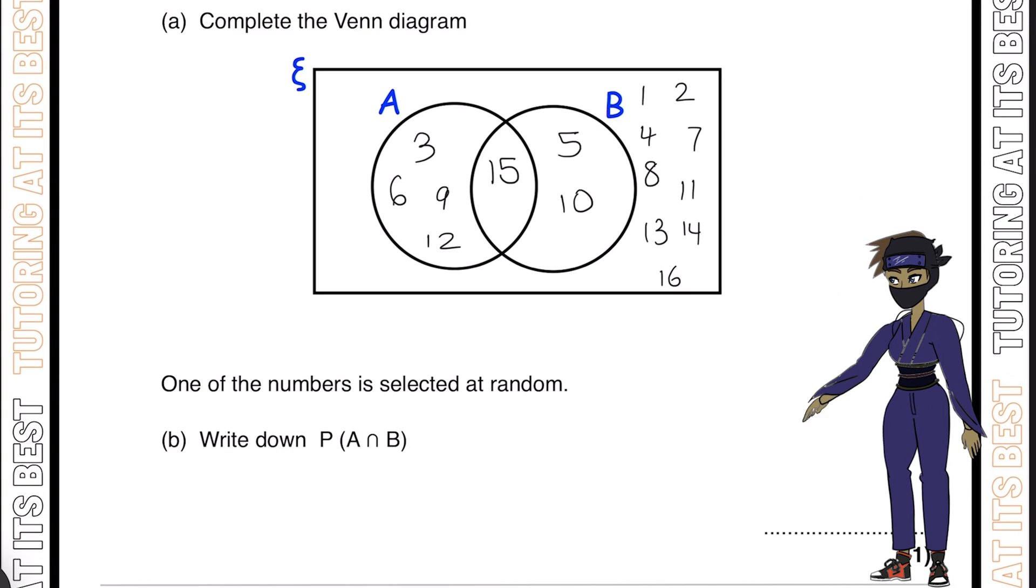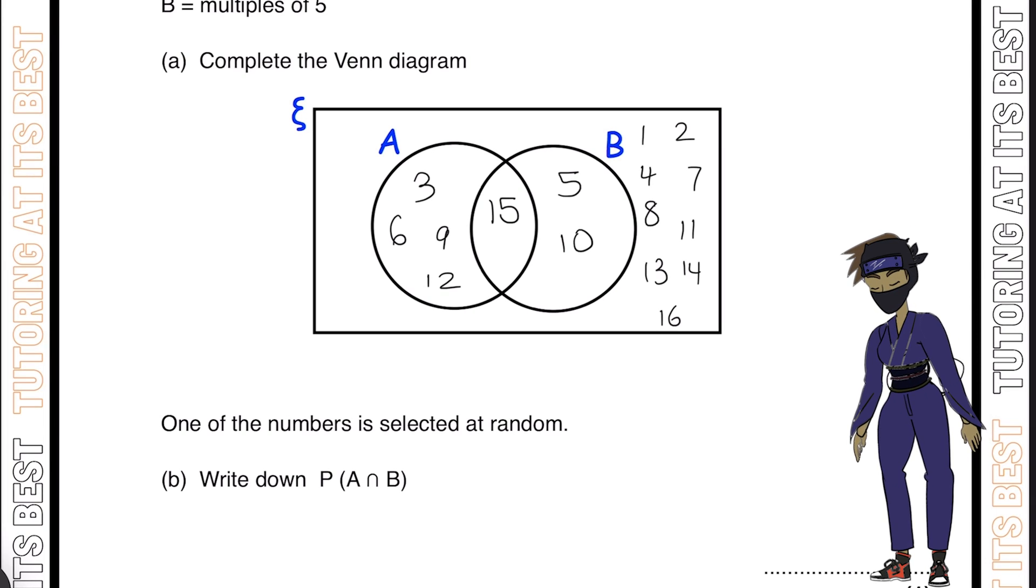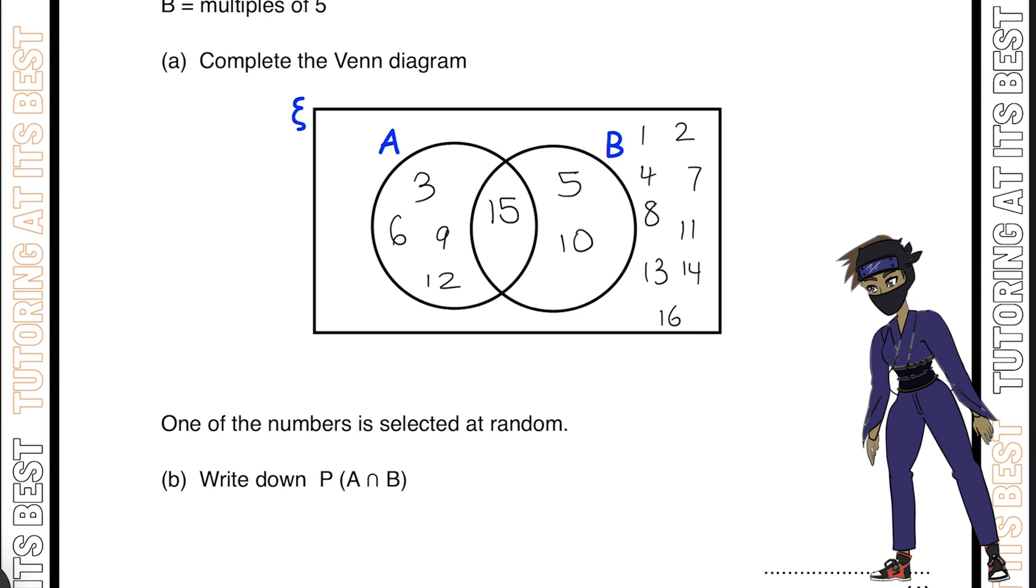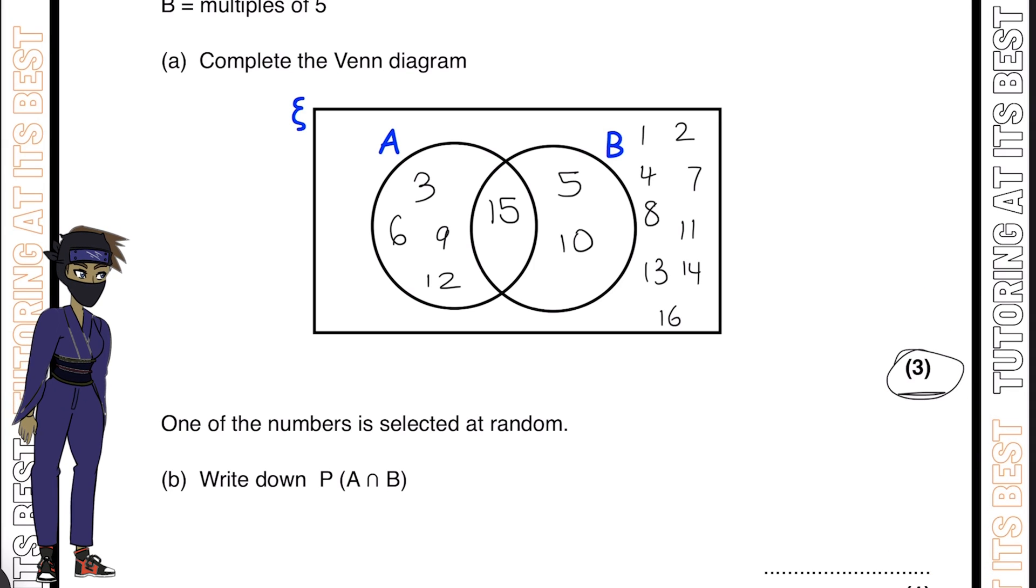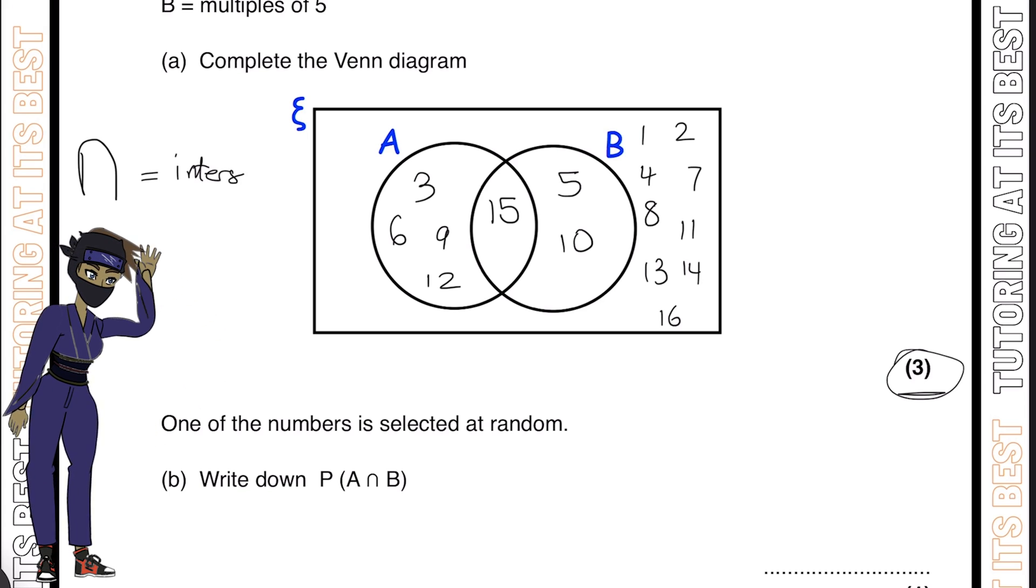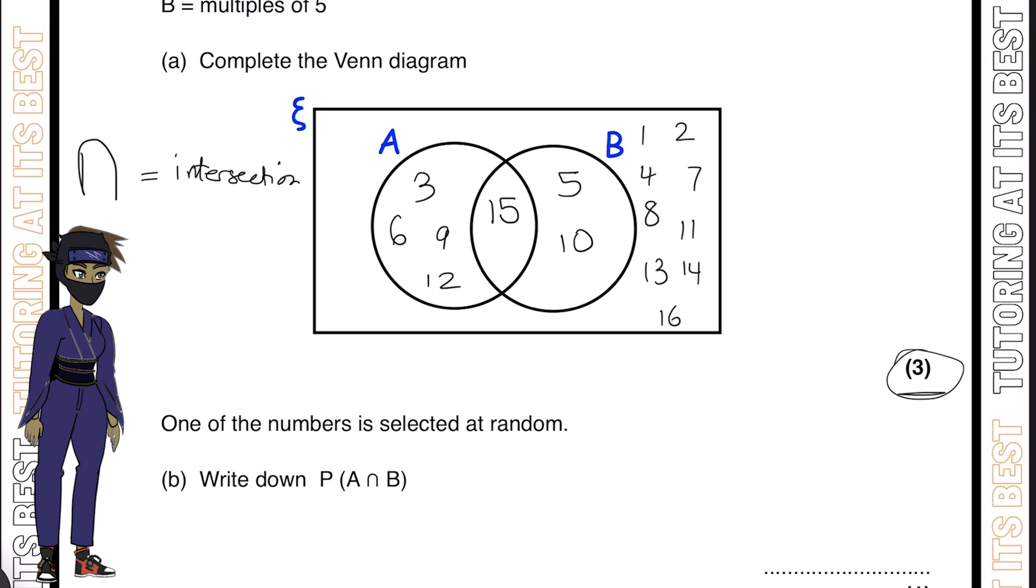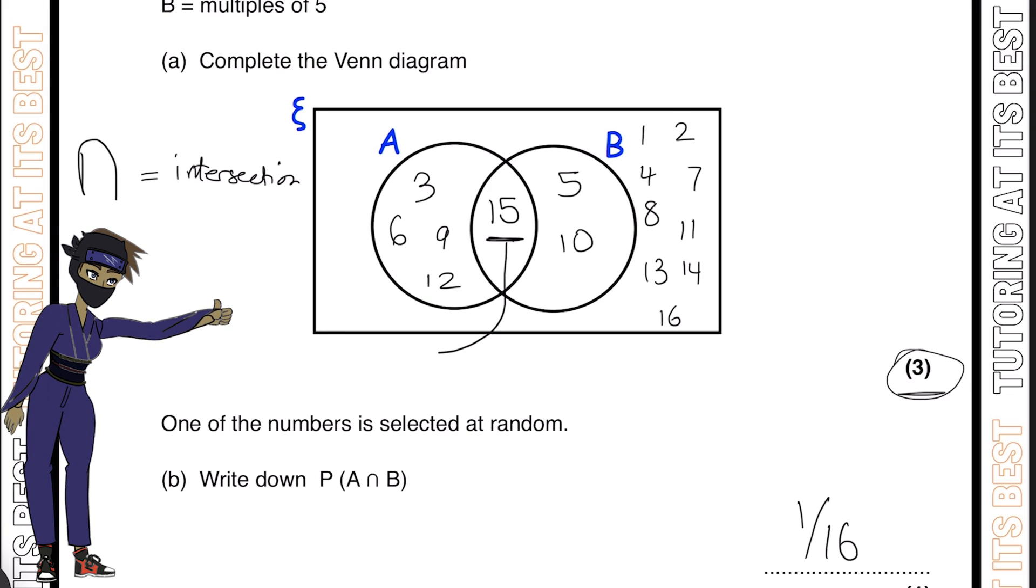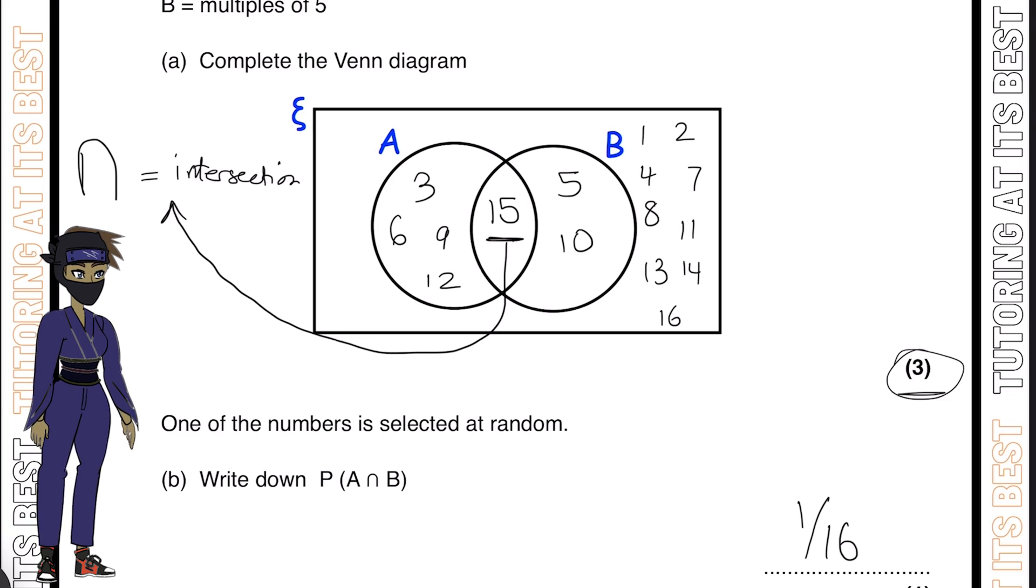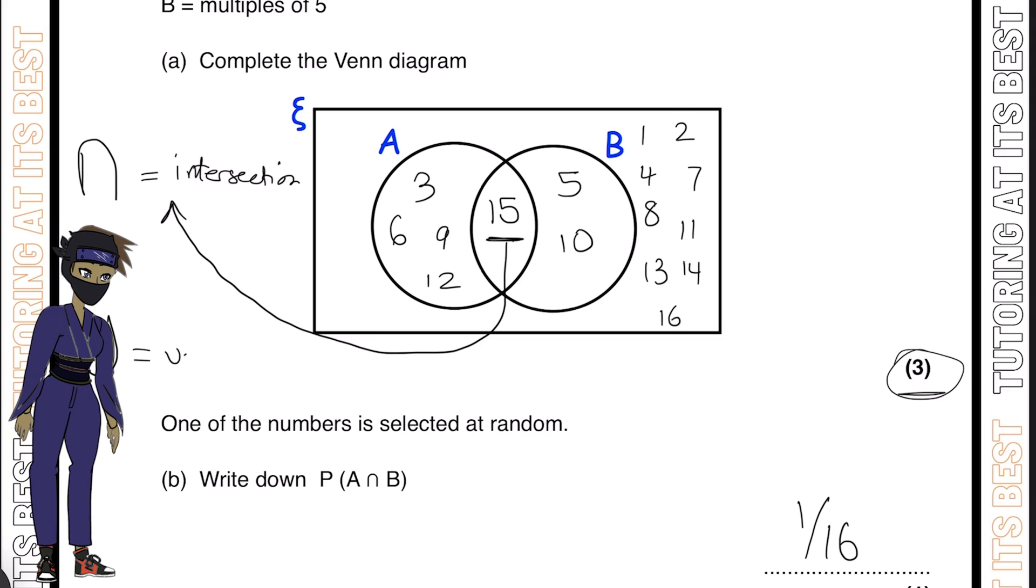For part B, it states write down the probability of A intersect B. What does intersection mean? We have two main symbols here: the intersection symbol, which follows through with everything that they share. For our intersection, we would have 1 over 16, because 15 is the only thing that A and B share. But if we were to say the union, we'd have this symbol here, which means everything within A and B.